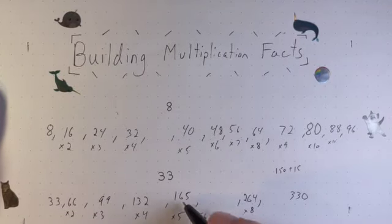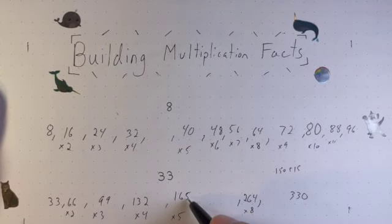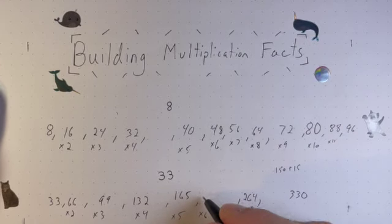To get my times 6, well, 5 thirty-threes is 165, so 6 thirty-threes will be 198.